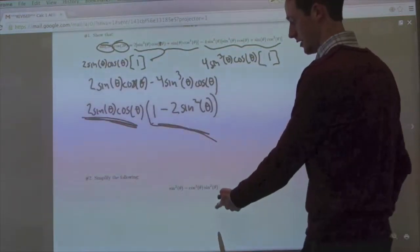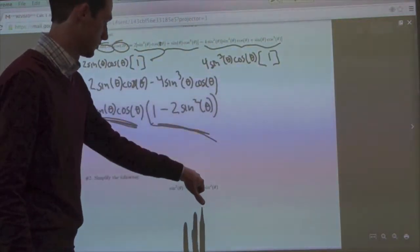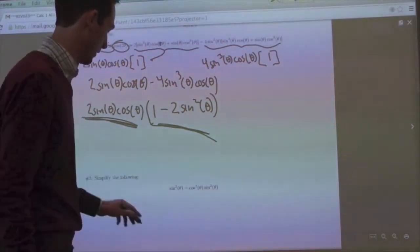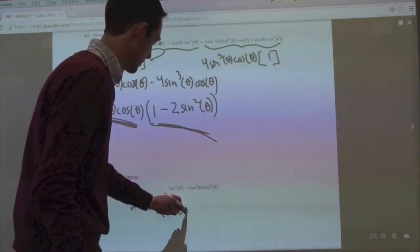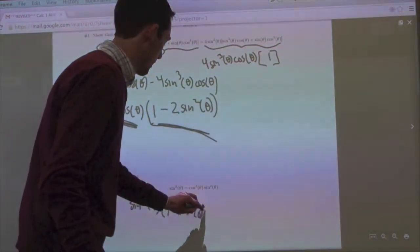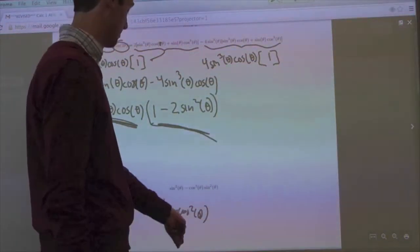And we'll do number two down here real quick. What you notice is it's sine squared minus cosine squared sine squared, so we can pull out that as a sine squared. You'll be left with a one minus cosine squared, and after going through that, you're going to see that one minus cosine squared is just going to be sine squared.